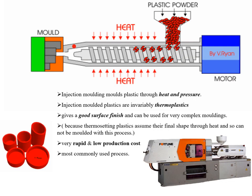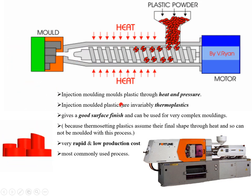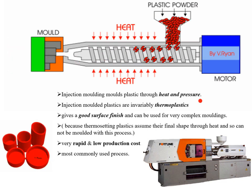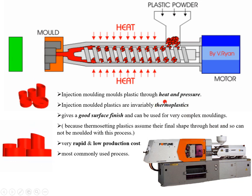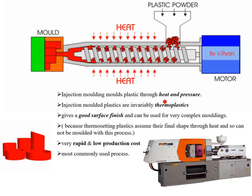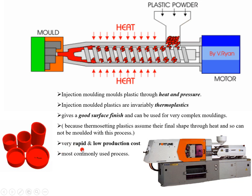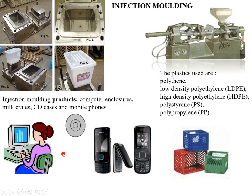Which types of plastic can be prepared? Injection molding works on heat and pressure — that is how we convert powdered plastic into a softer one. This is possible only for thermoplastics because they can soften on heating. Because of the process, you get very good finishing. This process is very rapid and has low production cost, and is the most commonly used process for simple objects like milk crates, CD cases, and mobile phones.